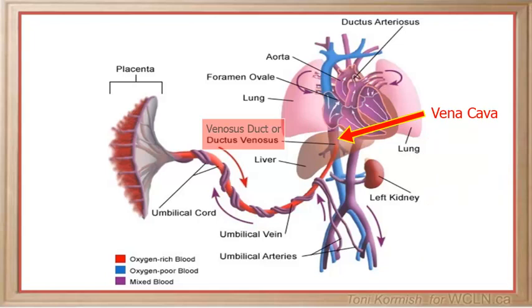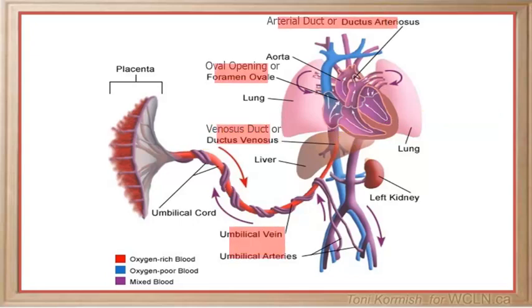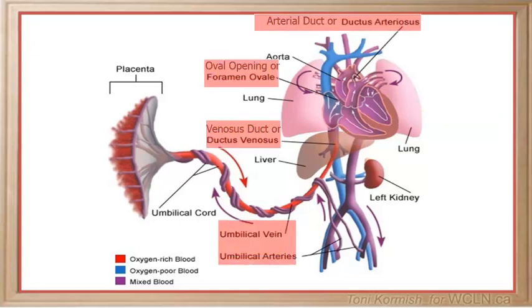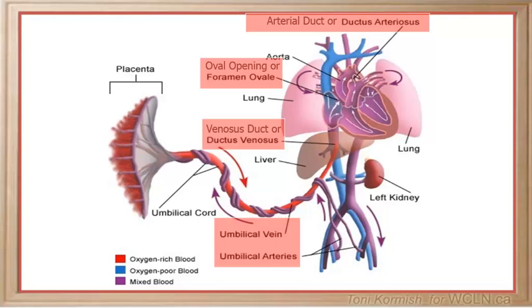If you remember that this structure is located between two veins — the umbilical vein and the vena cava — it makes it easier to remember that this duct is called the ductus venosus. Be sure you can identify these four structures given a fetal diagram and describe their functions.